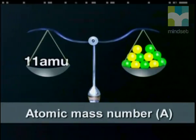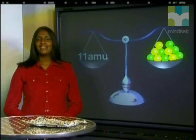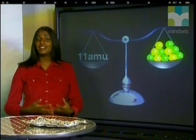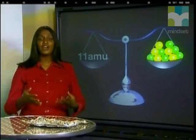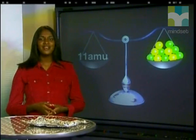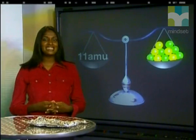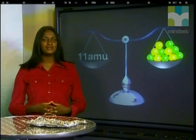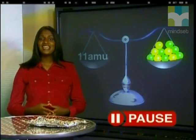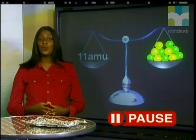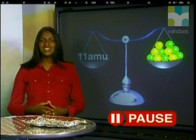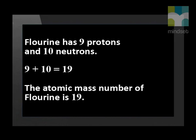Now try another calculation on your own. Fluorine has nine protons and ten neutrons. Find the atomic mass number, A, for an atom of fluorine.